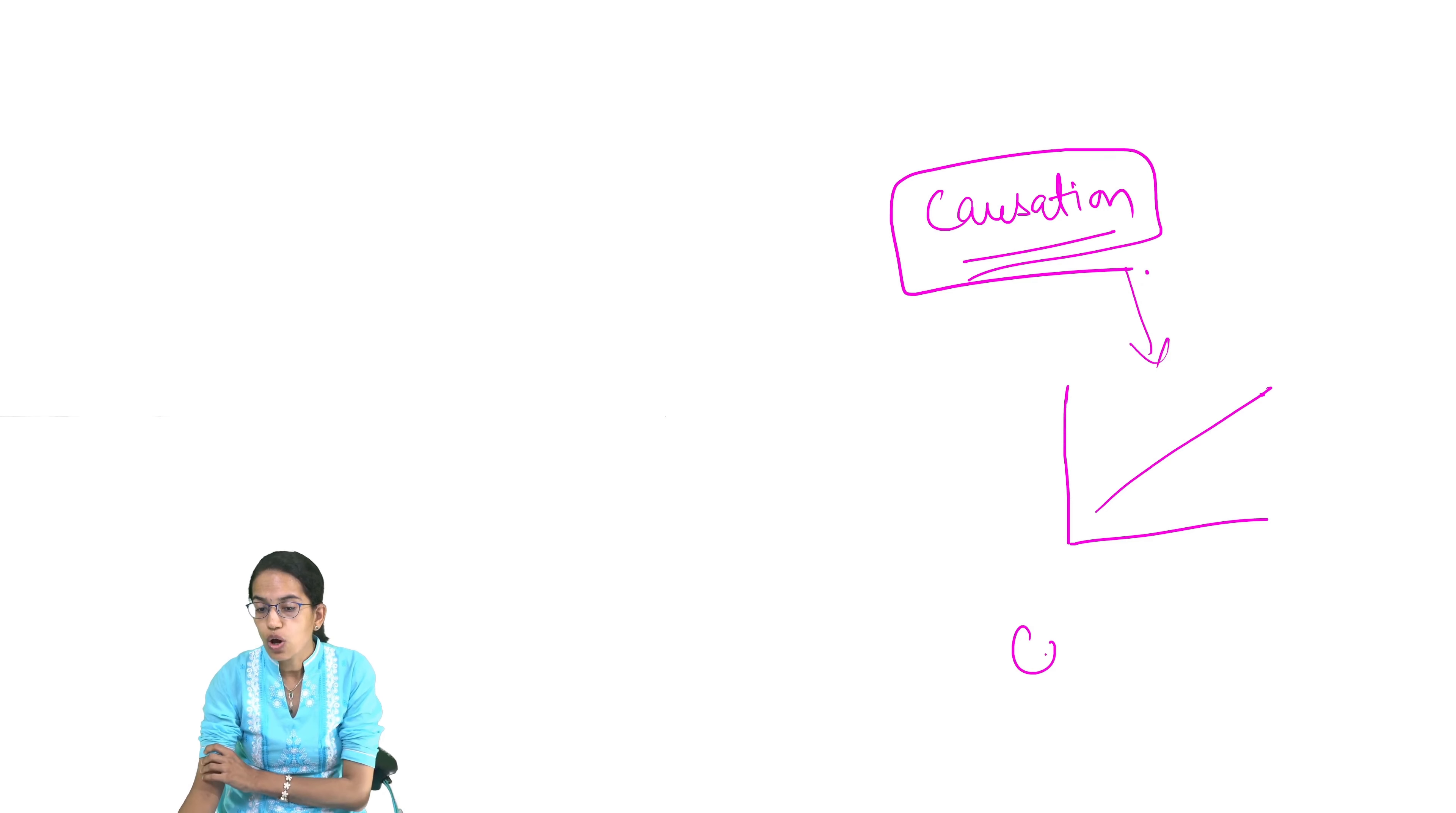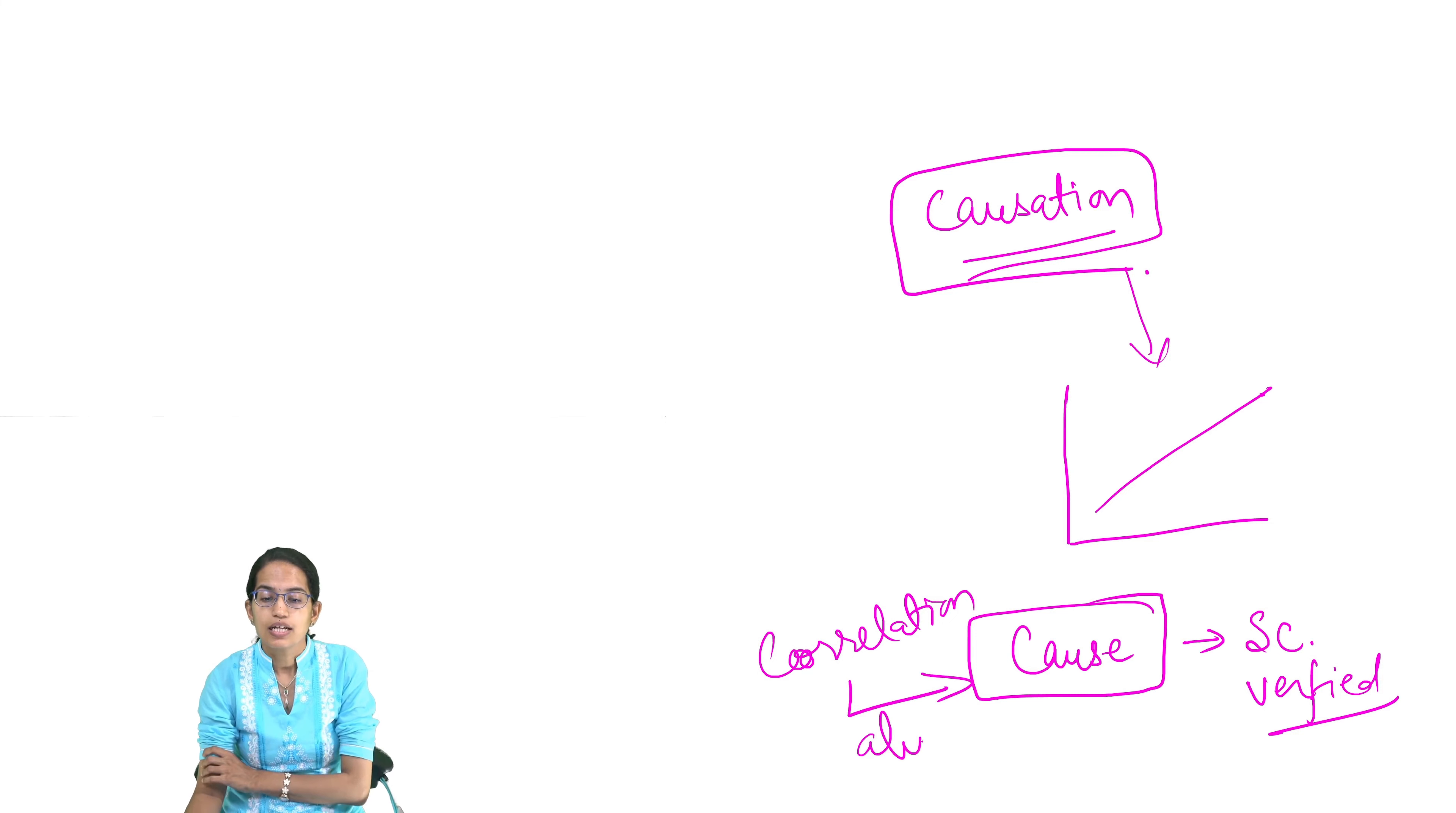The cause was established only once it was scientifically verified and proved. It's not necessarily that correlation between two things will always lead to the cause. It's not at all important that if there is a correlation, there has to be a causation.